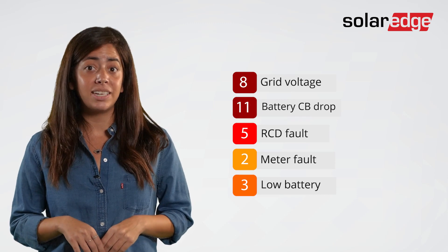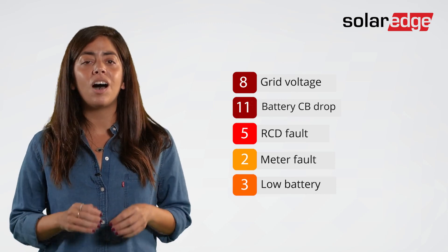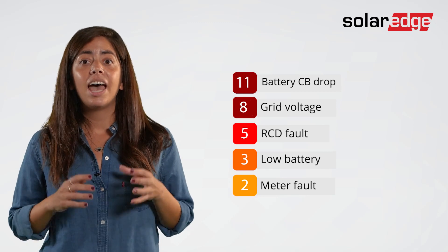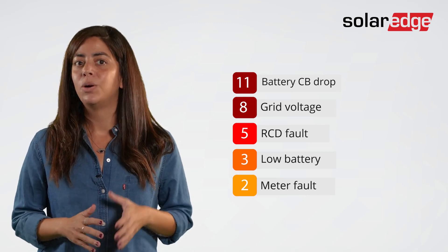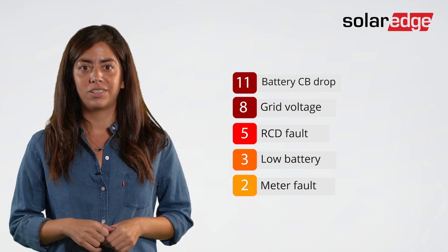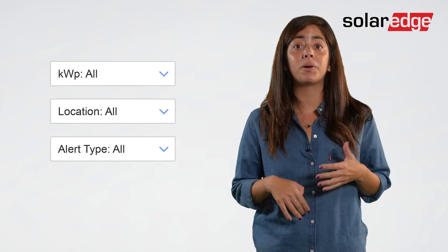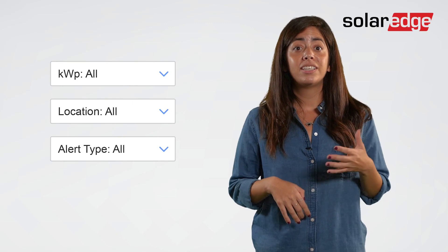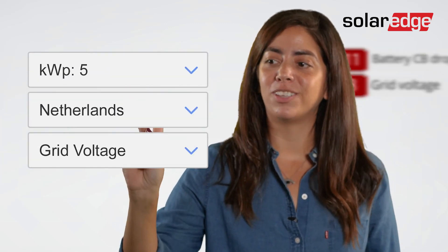Thanks to the impact indicator feature, each incoming alert is automatically prioritized, helping you decide how quickly you must deal with each alert. You can also filter and sort the list according to specific parameters, such as system size, location, or types of alerts — just one aspect of the powerful customization options at your disposal.